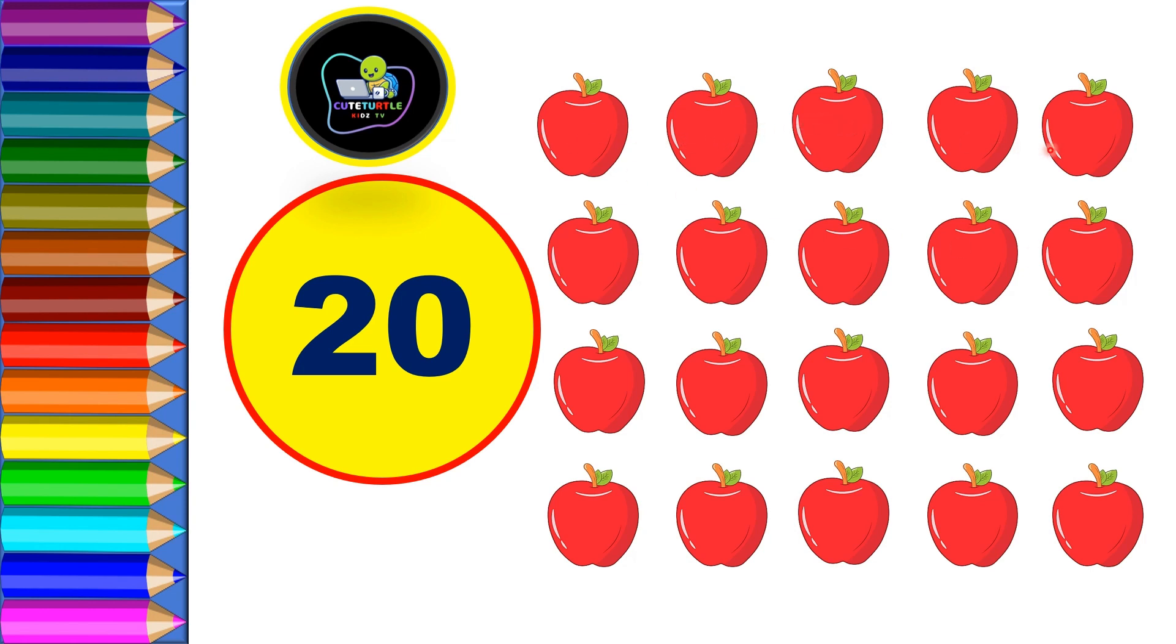And last, twenty. So let's count: one, two, three, four, five, six, seven, eight, nine, ten, eleven, twelve, thirteen, fourteen, fifteen, and sixteen, seventeen, eighteen, nineteen, and twenty. Total twenty apples. So today we learned one to twenty numbers.